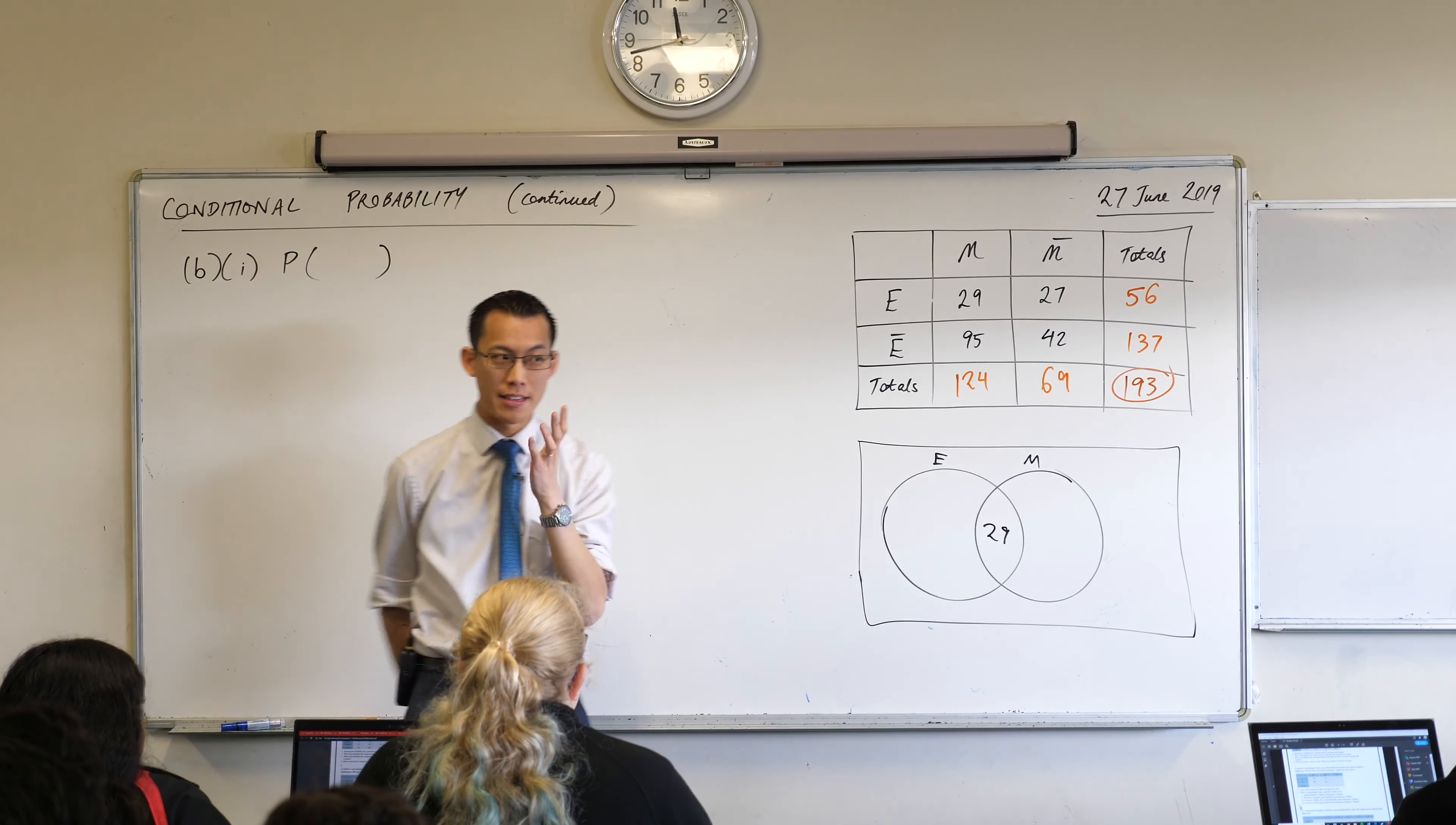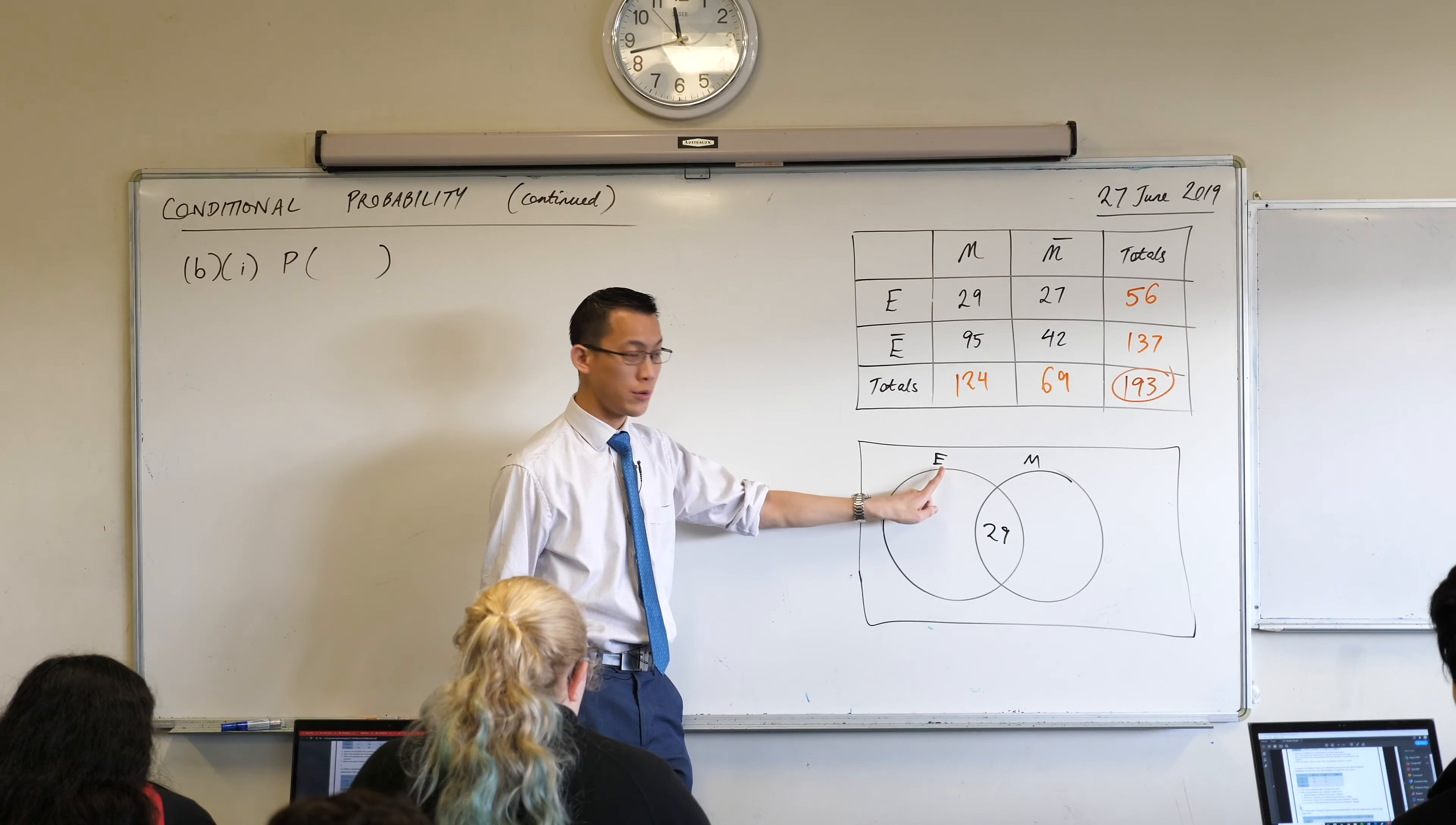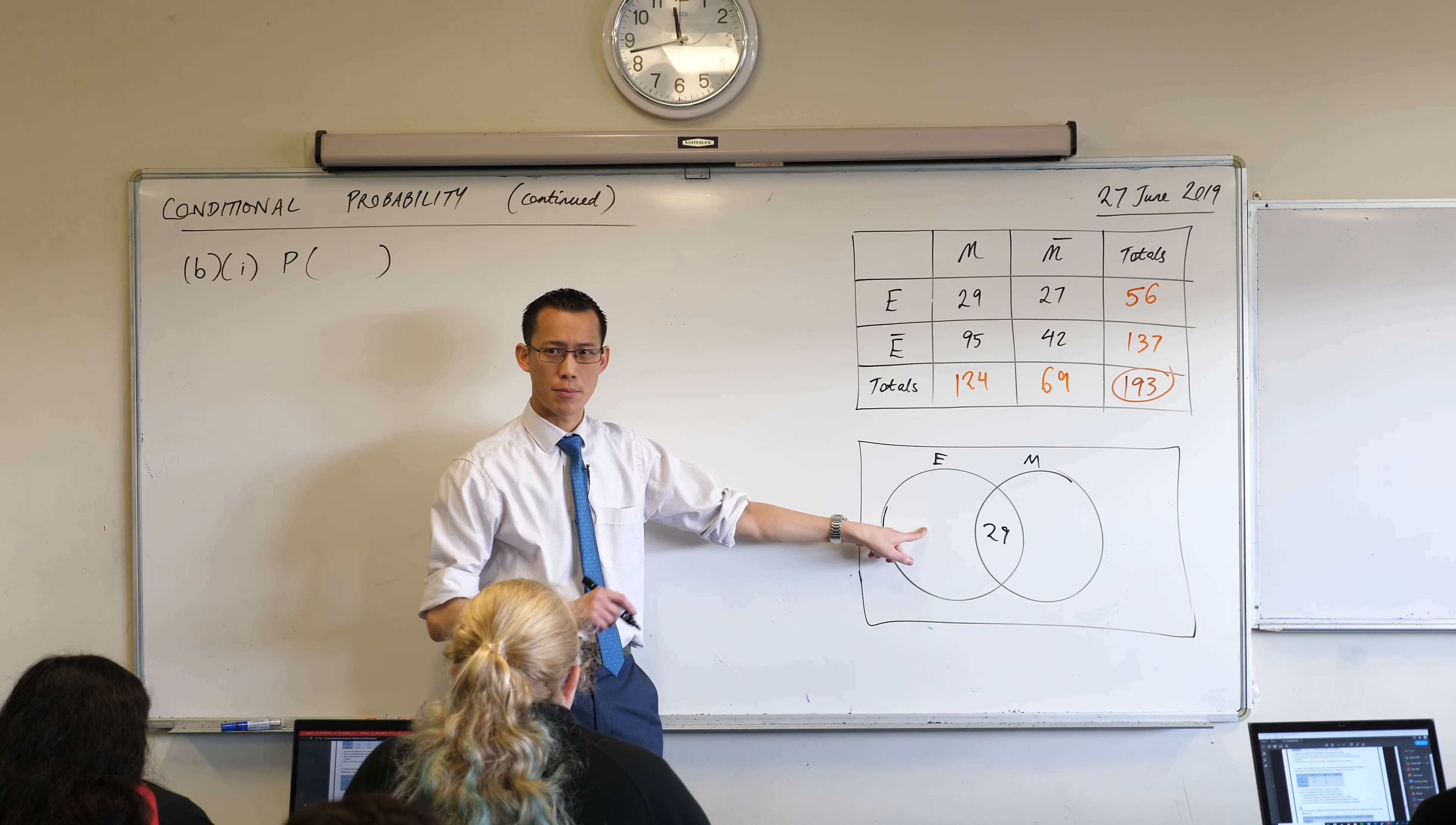All right, let's have a think together then. I can hear your reasoning, which is excellent. Let's do this as a group. I'm going to start over here. This part of the diagram—this is people who do extension 1 English, but being that they're outside of this circle, they don't do extension 1 math. So which number does that represent?